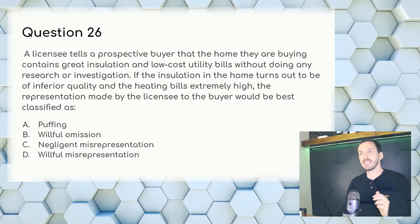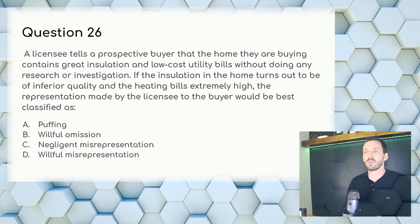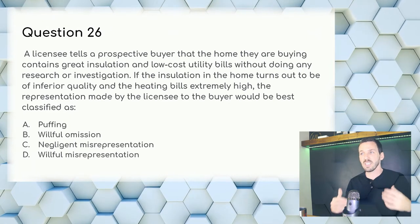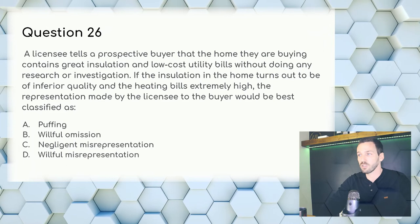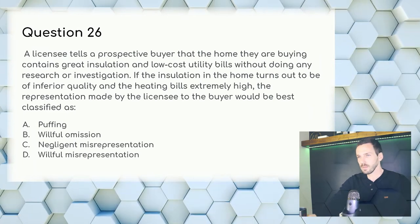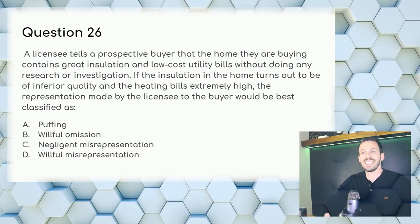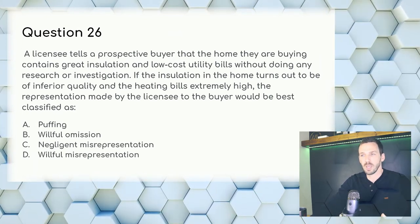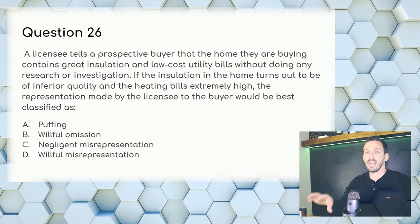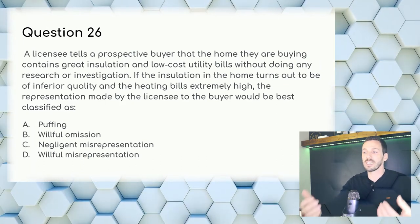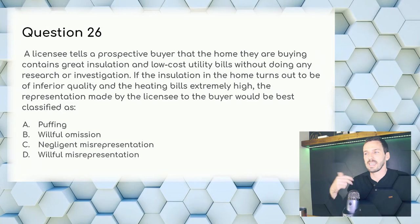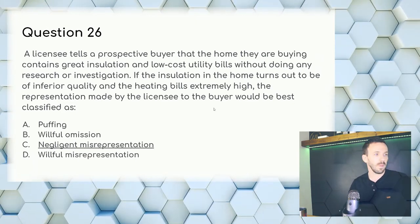Question 26: A licensee tells a prospective buyer the home has great insulation and low utility bills without doing any research. If the insulation turns out to be inferior and bills are high, the representation is best described as — puffing is glamorous advertising, omission is leaving info out, negligent is not knowing, willful is knowing. Since the agent didn't know whether the insulation was good or bad, Answer: C, negligent misrepresentation.